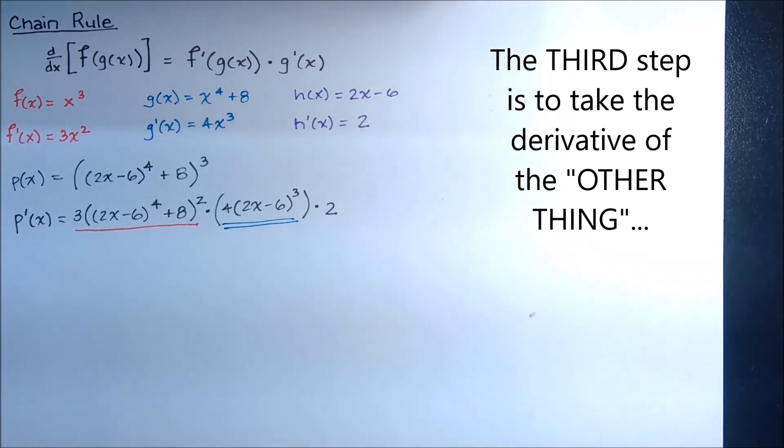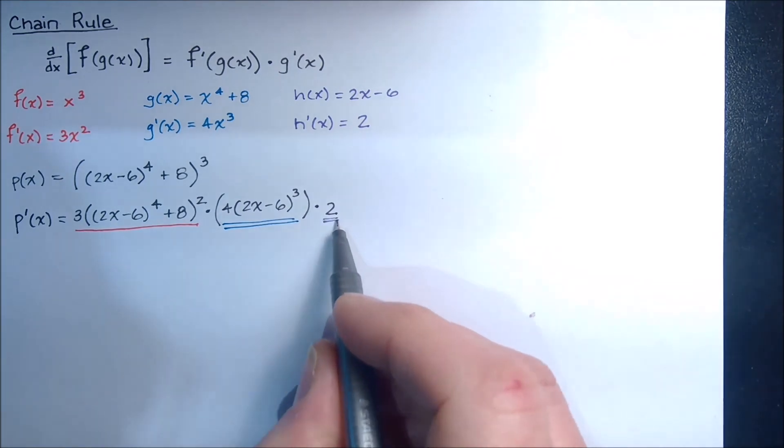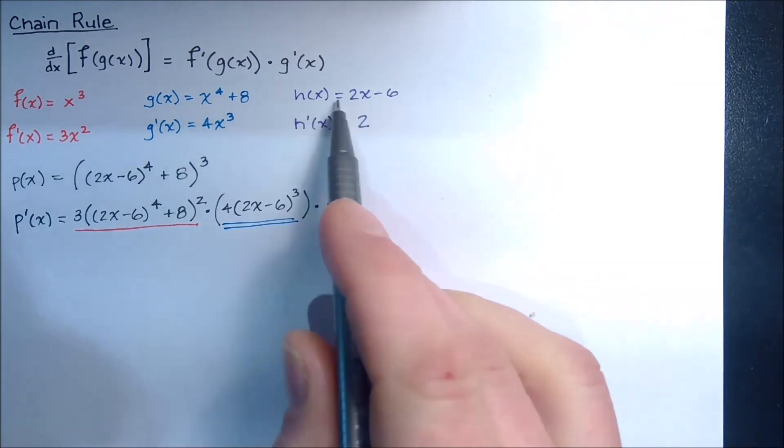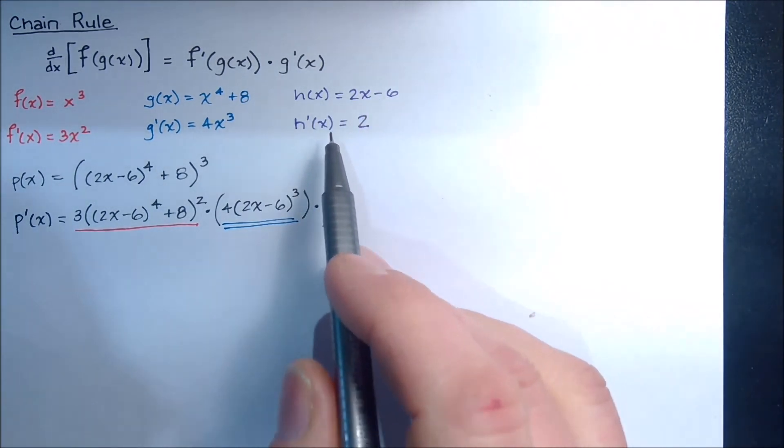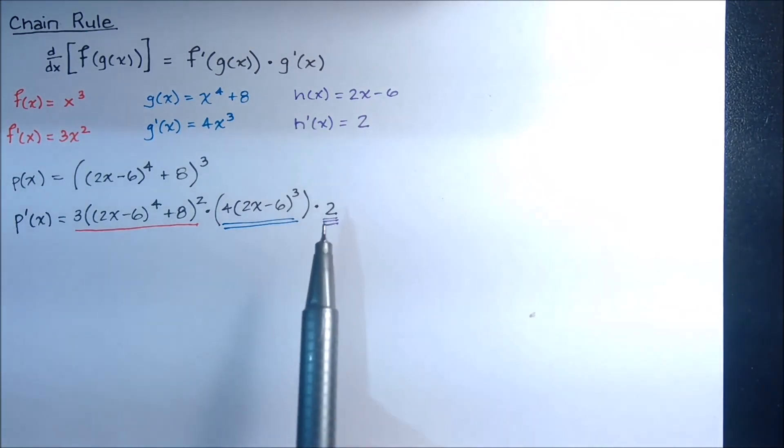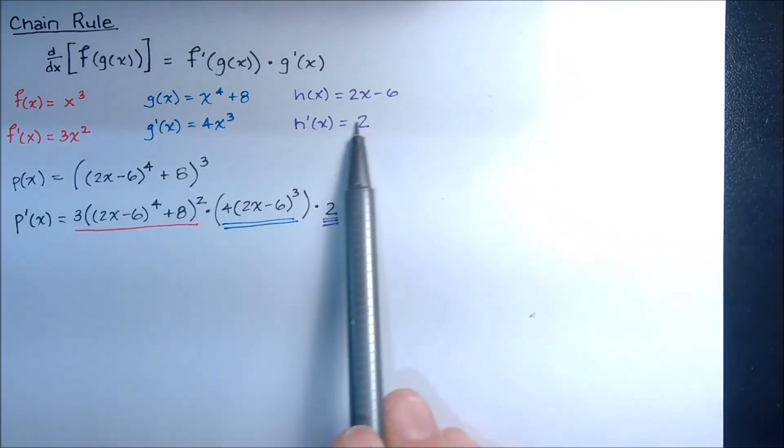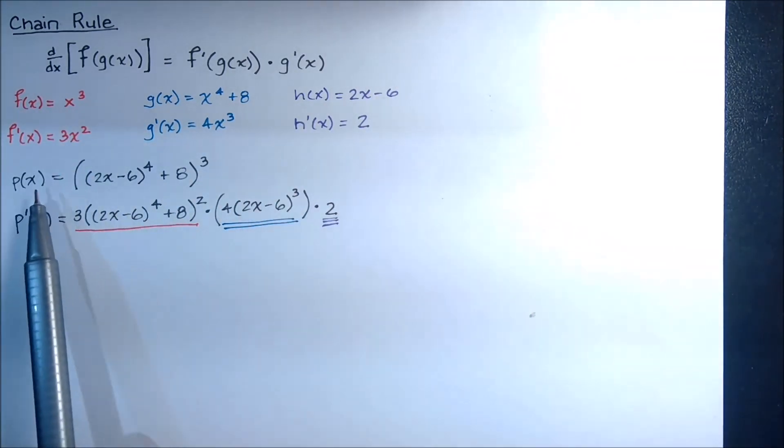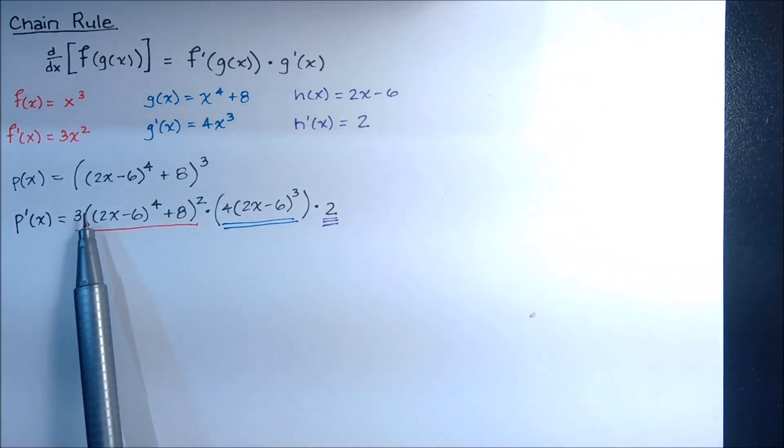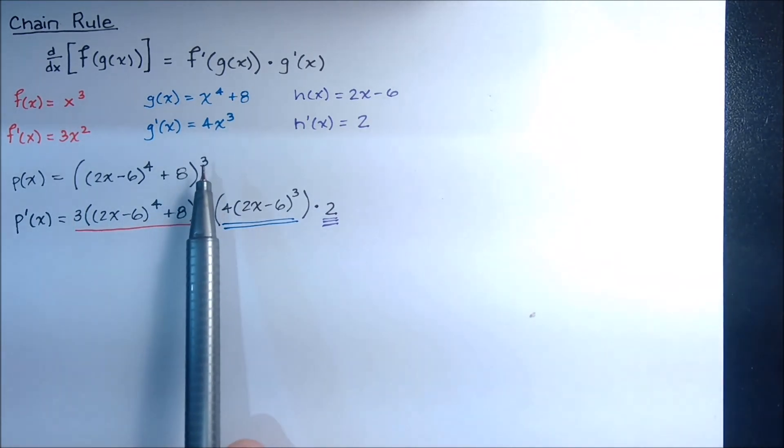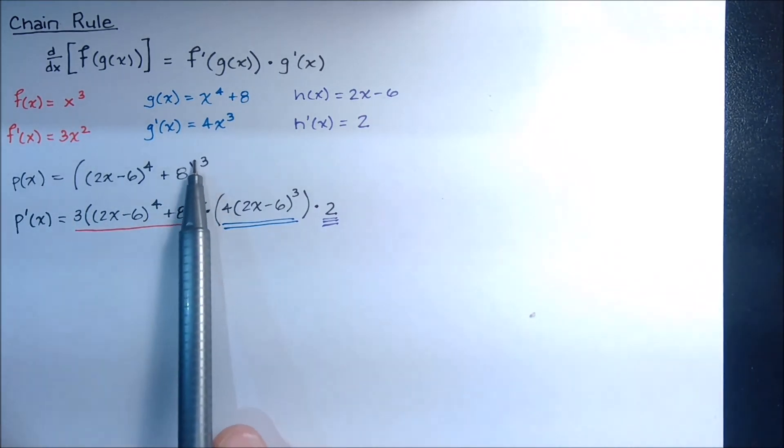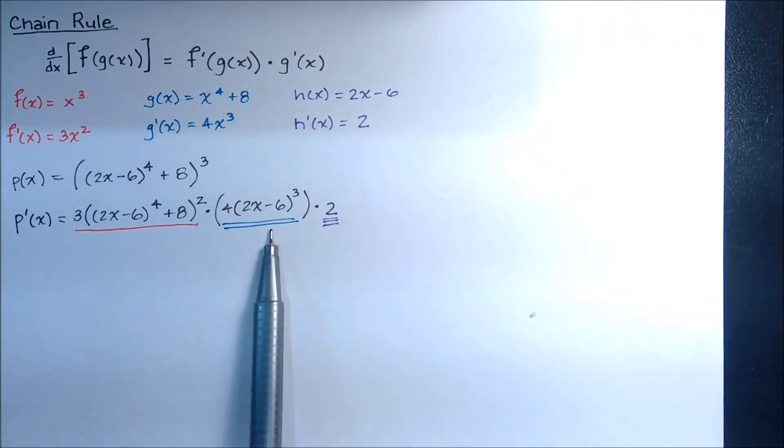And we've covered all three links in the chain. Notice, h of x, what we looked at before, h prime was just plain old 2. So you'll never know this stuff that I did up here in red. It won't be explicitly given to you. Instead, you'll start out with something like p of x. But taking that derivative is just a matter of going link by link in the chain until the very last piece, the innermost part of the function, is just a linear function, and it's all done.